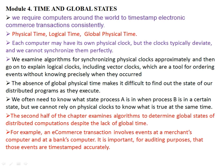Each computer may have its own physical clock, but the clock typically deviates and we cannot synchronize them perfectly. The physical time of each computer is different, so they deviate from each other. We examine algorithms for synchronizing the physical clock approximately, and then go on to explain logical clocks, including vectors. These are all part of the first portion of this module.